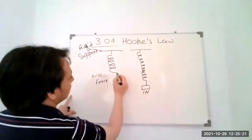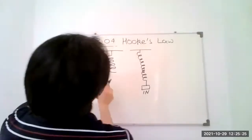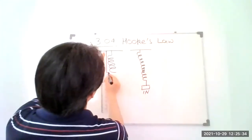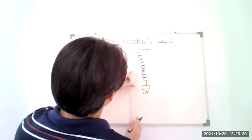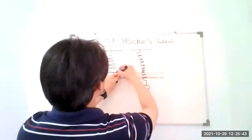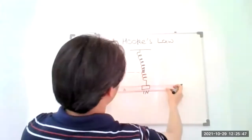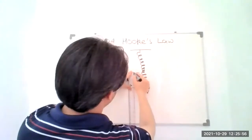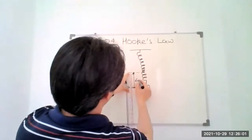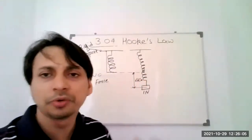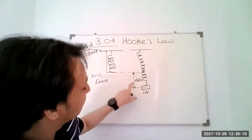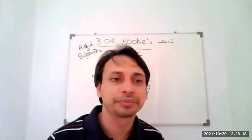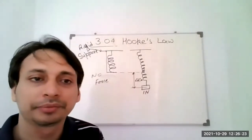Due to this one newton force, suppose I measure the length of the spring — and if I measure this length, it turns out to be four centimeters. This is the observation, children, and if you perform this experiment in the laboratory also, you will find the extension — the length increased of the spring — is four centimeters. Due to the force applied, there is an extension in the spring.